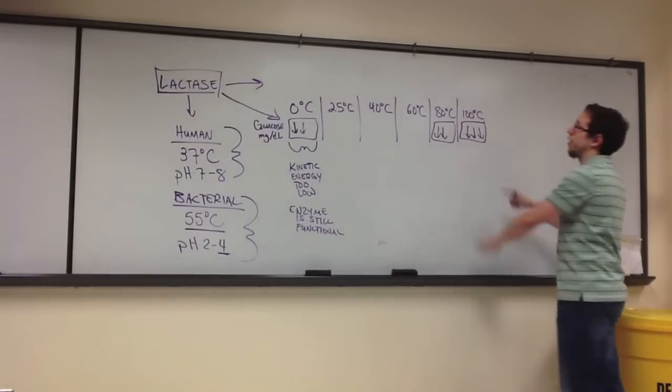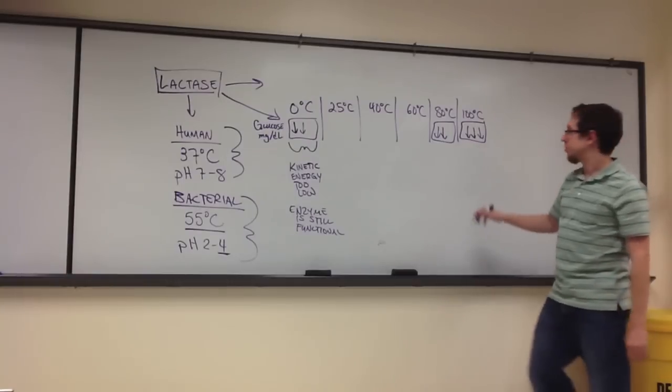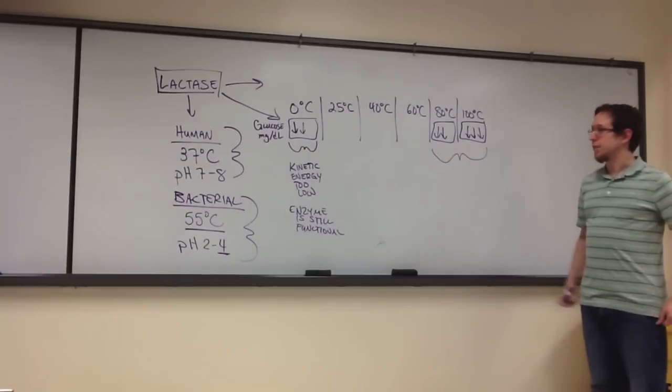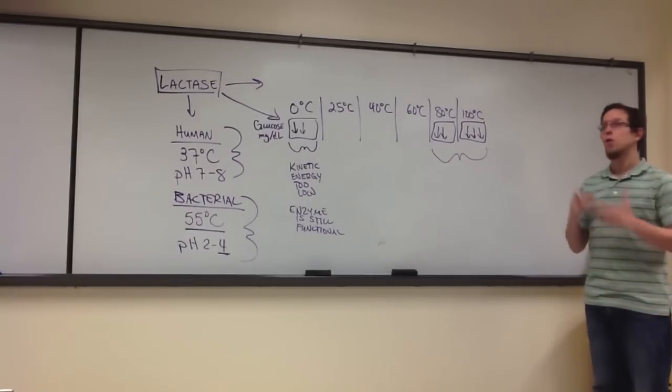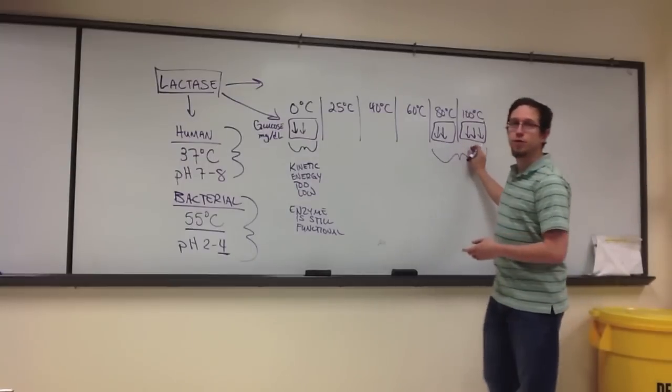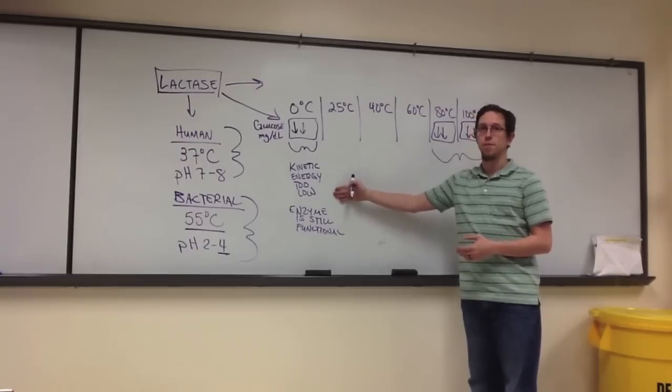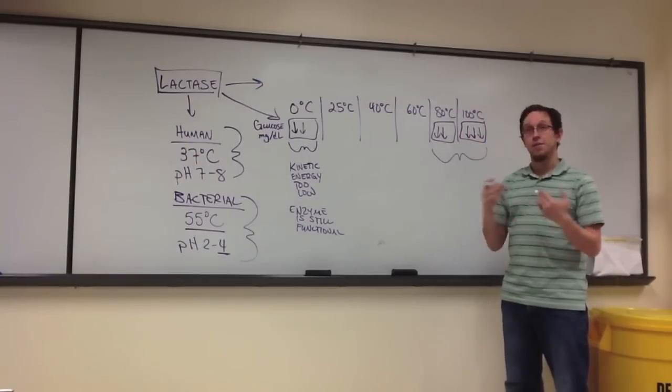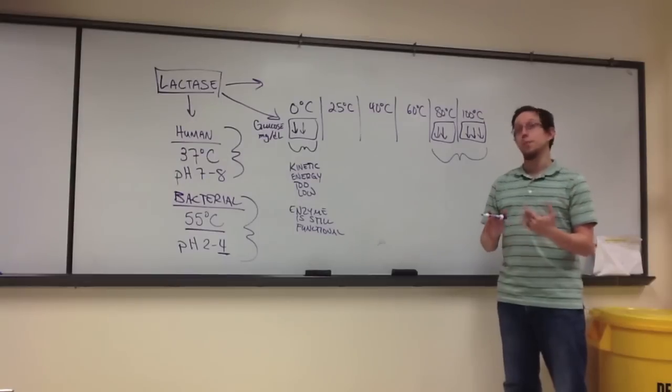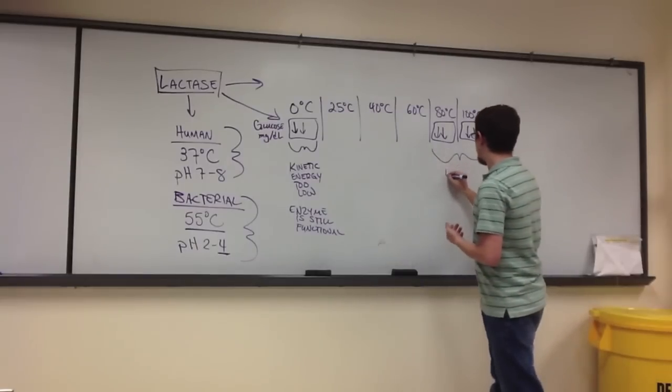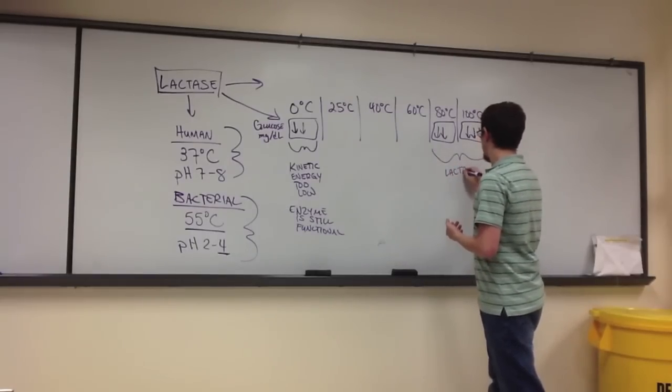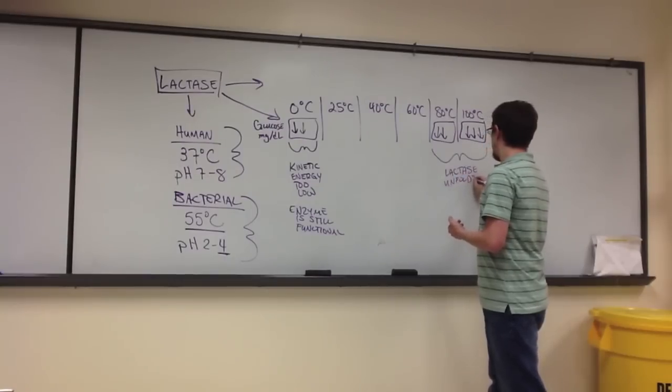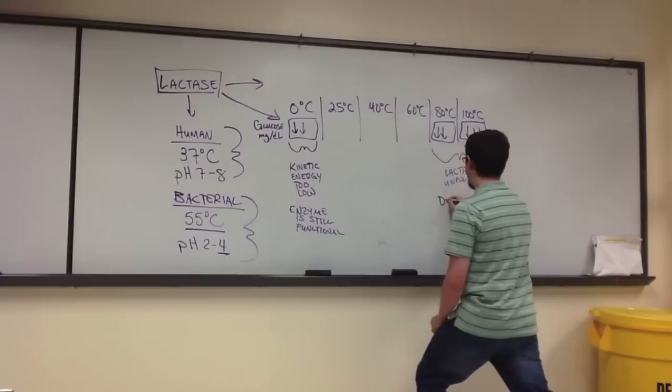Now, let's go over here to 80 and especially 100 degrees, where we see a decrease in enzymatic activity just like at 0. Why? Well, with these temperatures, it's not because the kinetic energy is too low. In these temperatures, the kinetic energy is incredibly high. What that effectively does is it disrupts bonds in the enzyme. And so, the enzyme unfolds.